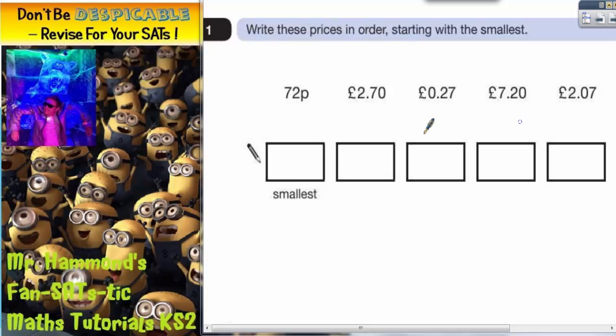We can see straight away that this one and this one are both less than a pound. So we're starting with the smallest. Which is smaller, 72 pence or 27 pence? Well it's obviously got to be 27 pence.